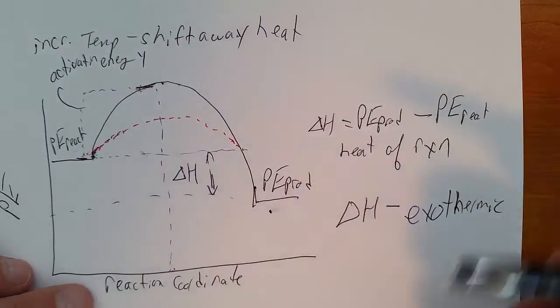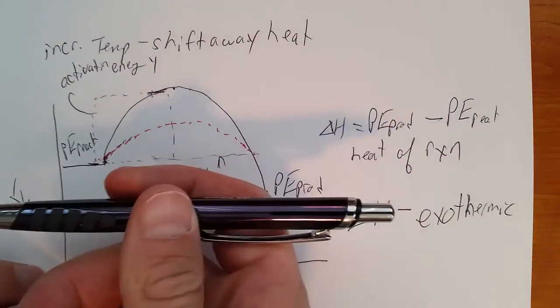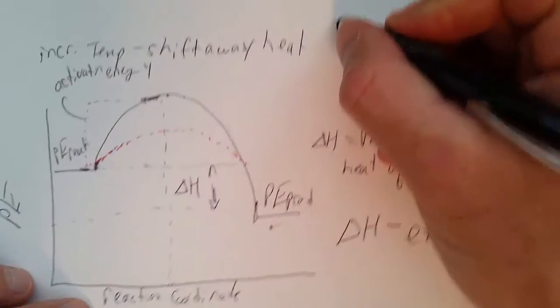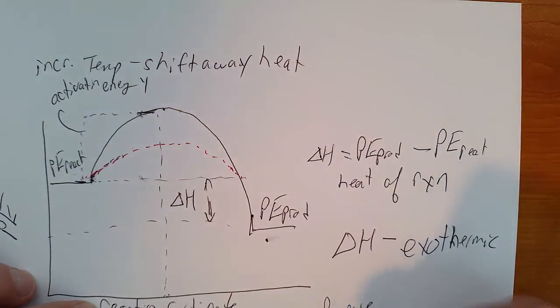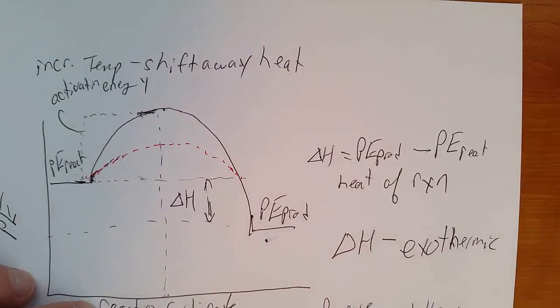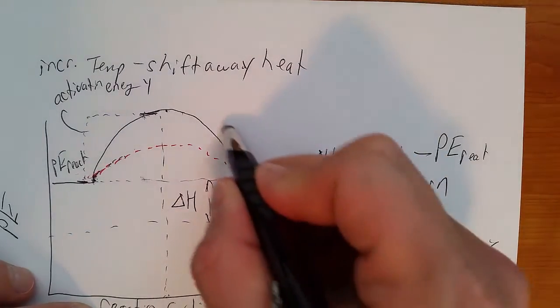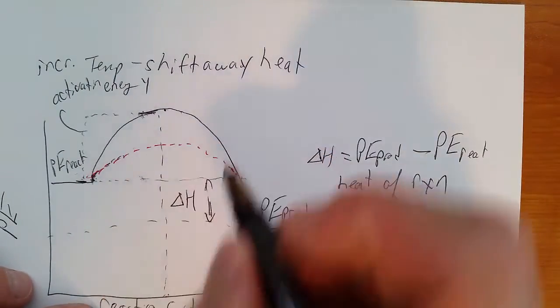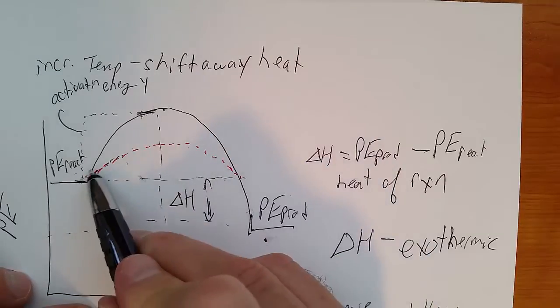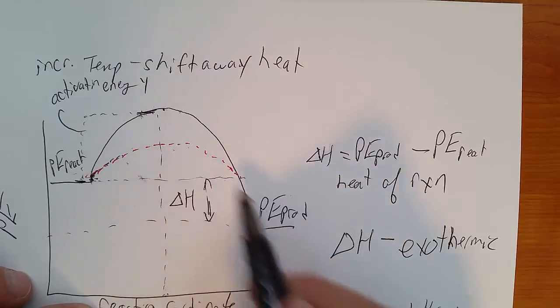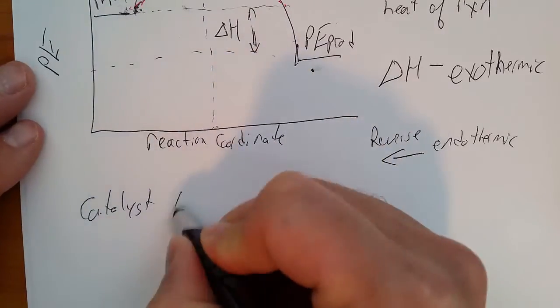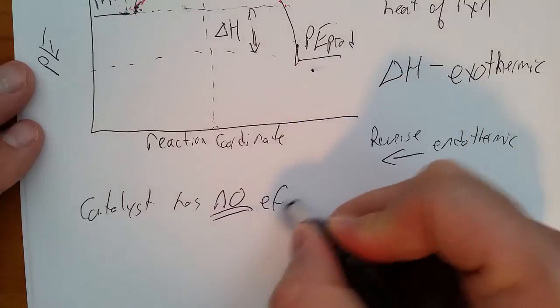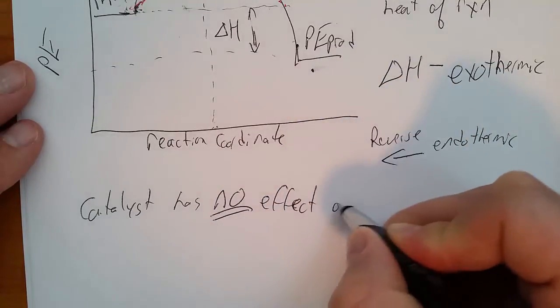However, if this were an equilibrium reaction and we go in reverse, the reverse reaction would be endothermic. The activation energy of the endothermic reverse reaction is much higher than the activation energy of the forward. When we add a catalyst, it lowers both the forward activation energy and the reverse activation energy. So a catalyst has no effect on equilibrium.